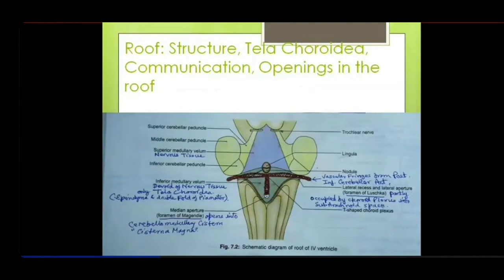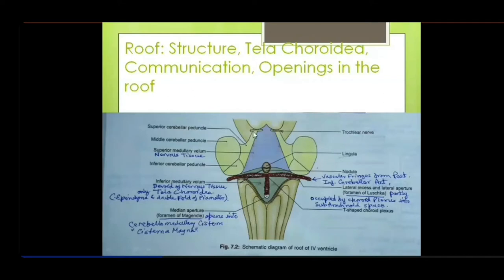We will study the roof of the fourth ventricle. Imagine the cerebellum has been removed — the cavity of the fourth ventricle is covered by the roof. The cerebellum is in dorsal relation to the fourth ventricle; it covers it from the dorsal side, but the roof is actually formed by a thinned-out sheet of nervous tissue called the superior and inferior medullary velum.